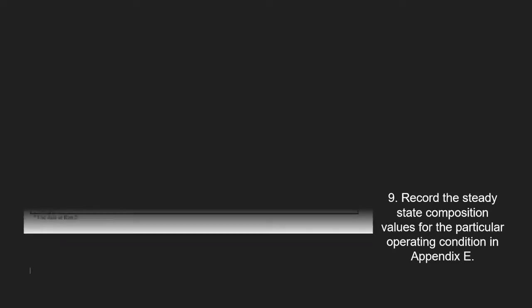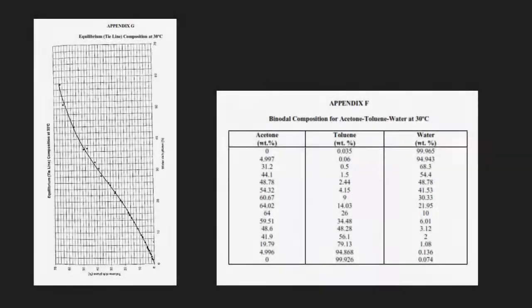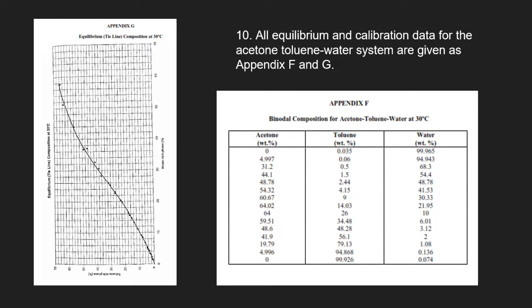Record the steady state composition values for the particular operating condition in the table as given in Appendix E. All equilibrium and calibration data for the acetone-toluene-water system are given in Appendix F and G. Thank you, Shaila and Christina. I'm Yongxing and I'm going to share the results and discussion in this mixer-settler experiment.